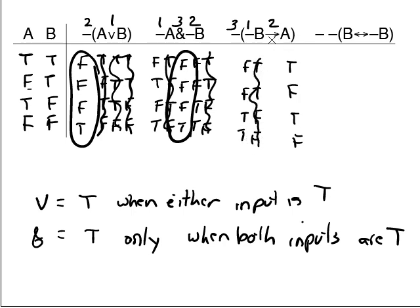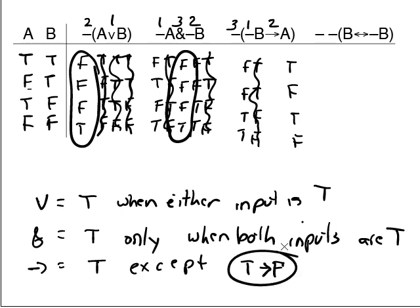Now we're supposed to work on the arrow. What's the rule for arrow? The rule for arrow is that it is true except T arrow F. It's true except the T arrow F case.